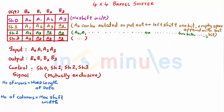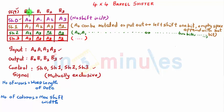Here it's a 4x4 barrel shifter where my inputs are A0, A1, A2, and A3. My outputs are going to be B0, B1, B2, and B3, and the control signals are going to be shift 0, shift 1, shift 2, and shift 3. Remember that these control signals are going to be mutually exclusive, meaning at one point in time only one of them will be high. If shift 0 is high there is no shift, so A0 becomes B0, A1 becomes B1, A2 becomes B2, and A3 becomes B3.